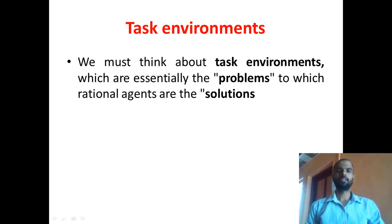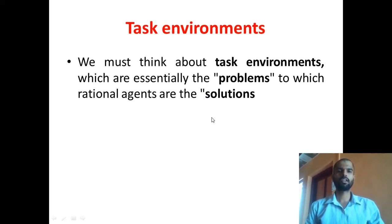Hello. The next topic of our subject Artificial Intelligence is Task Environments. We must think about the task environments, which are essentially the problems to which rational agents are the solution. Task environment is nothing but the environment where the agent is actually performing the task. In the previous lecture, I took the example of a robot playing football in a garden — so the garden is the task environment for that particular agent or robot.